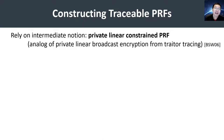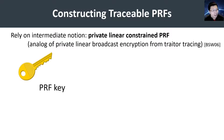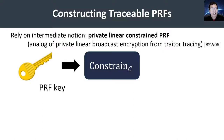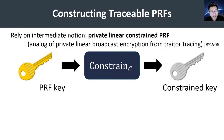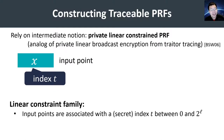To construct a traceable PRF, we rely on a new intermediate notion we call a private linear constrained pseudorandom function. This very much parallels the constructions of traitor tracing from the notion of private linear broadcast encryption — you can view private linear constrained PRFs as the analog of private linear broadcast encryption in the PRF world. In a constrained PRF, the holder of the PRF key can constrain it with respect to some constraint, modeled as a Boolean circuit C, to produce a constrained key. That constrained key can be used to evaluate the PRF on all points x in the domain that satisfy the constraint.